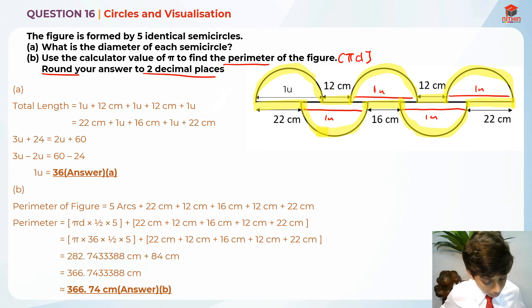How do we round off to two decimal places? We draw an arrow mark on the second decimal place and underline the next digit. Is 3 bigger than 5 or lesser than 5? It's lesser than 5, so 4 does not increase, it remains the same. The rest of the digits become zeros, which we don't write. So it gives us 366.74 cm.